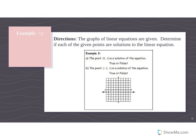For our last graphical example, let's test these points. (0, 1) is right up here, so that is false. For (-3, 1): go to the left three and up one — that is also false. We need to have points actually on the line in order for them to be solutions.